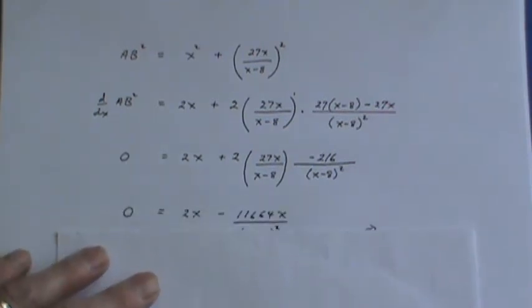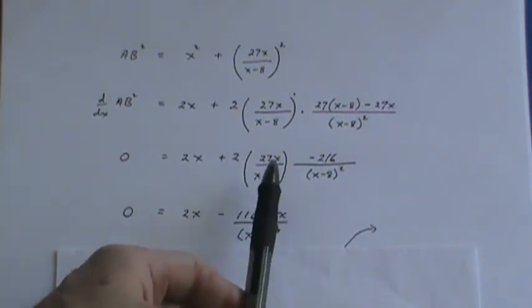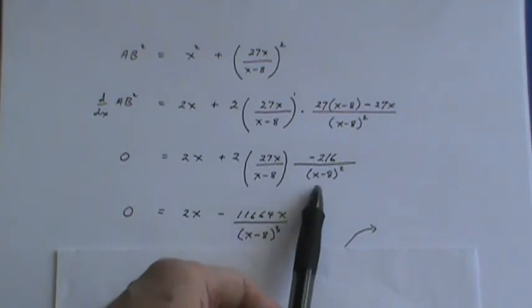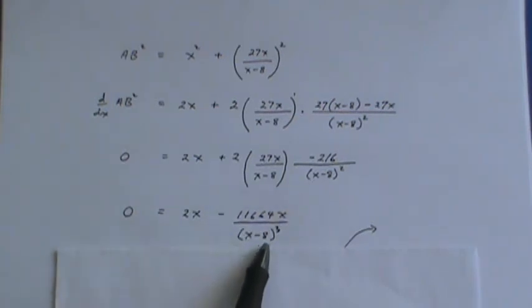And when I simplify that, I suppose I could find a more elegant solution to this but basically because we've all got calculators now I just multiplied the top together and this x minus 8 becomes x minus 8 cubed.